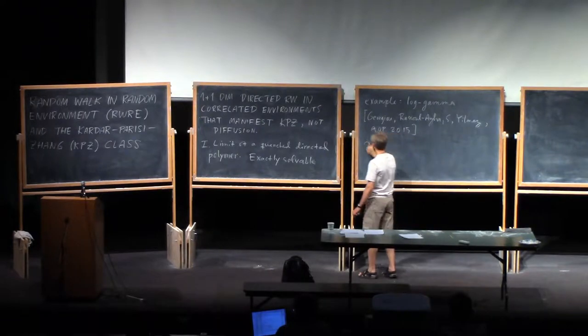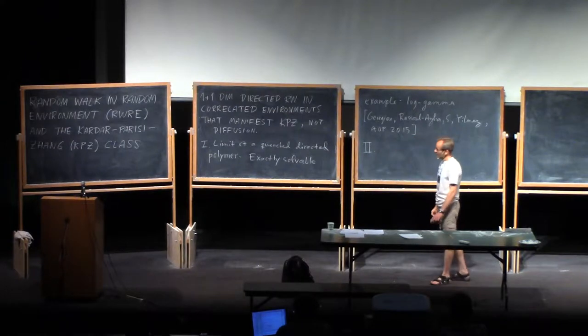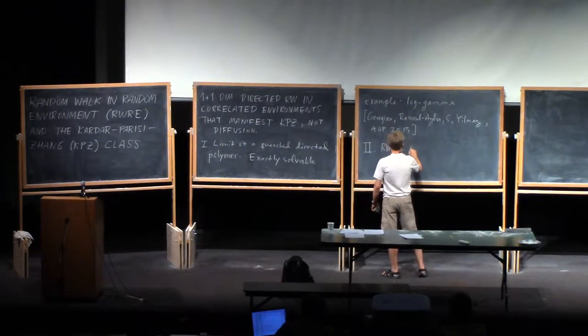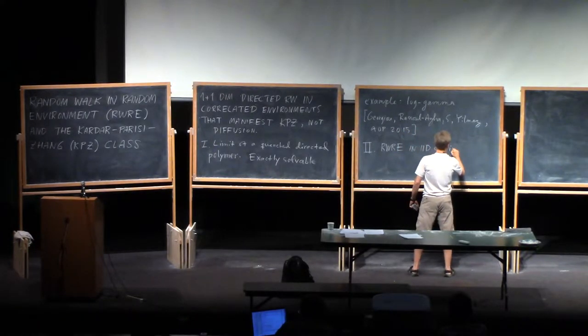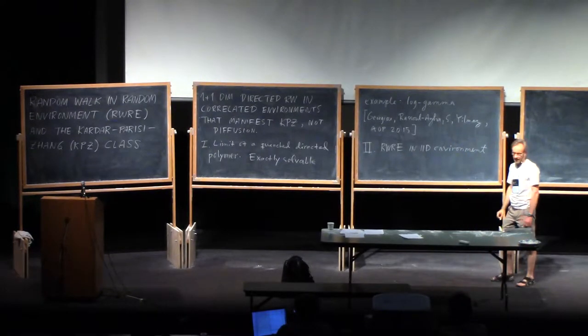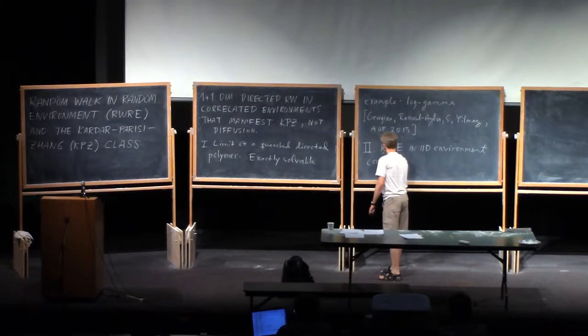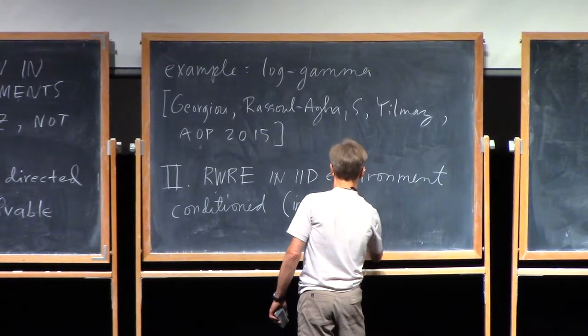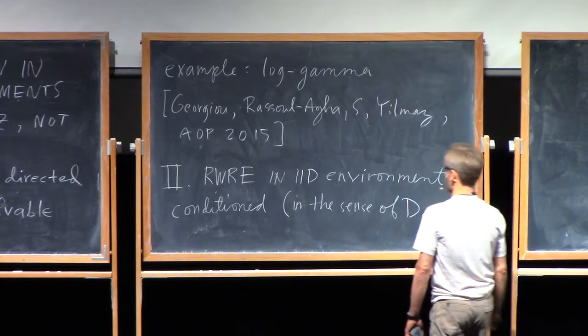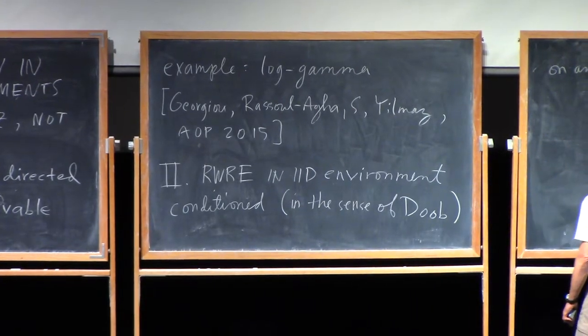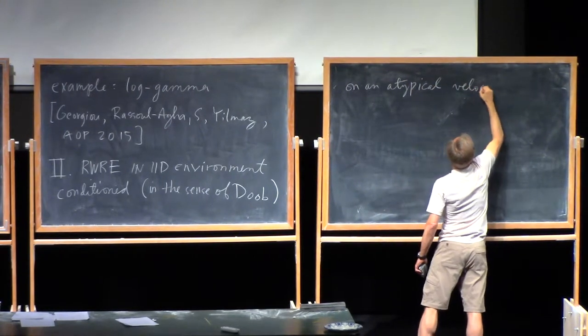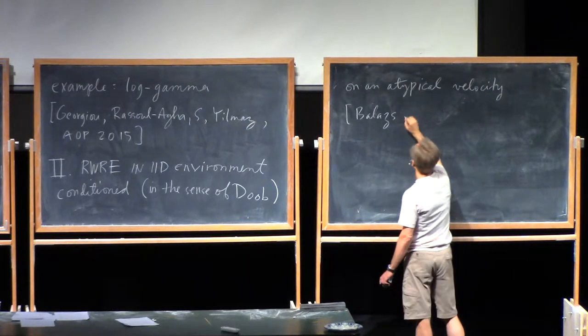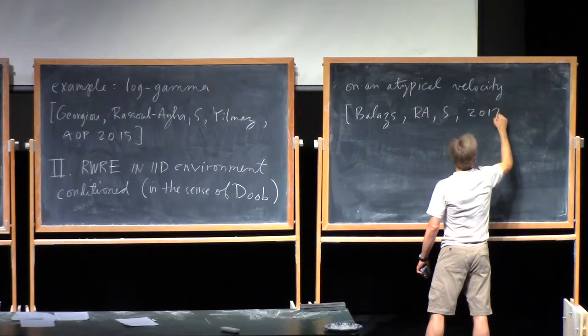And then the second case is one where you take a nearest neighbor directed RWRE in an IID environment. But then you condition it to go off to infinity at an atypical velocity. So, that's a singular conditioning. So, the conditioning has to be done in the sense of Doob. So, conditioned on an atypical velocity. And this is ongoing, not yet published work with Marci Bálint from Bristol, and Firaz Rasul Agha again. And hopefully we'll get this out in the next few months.